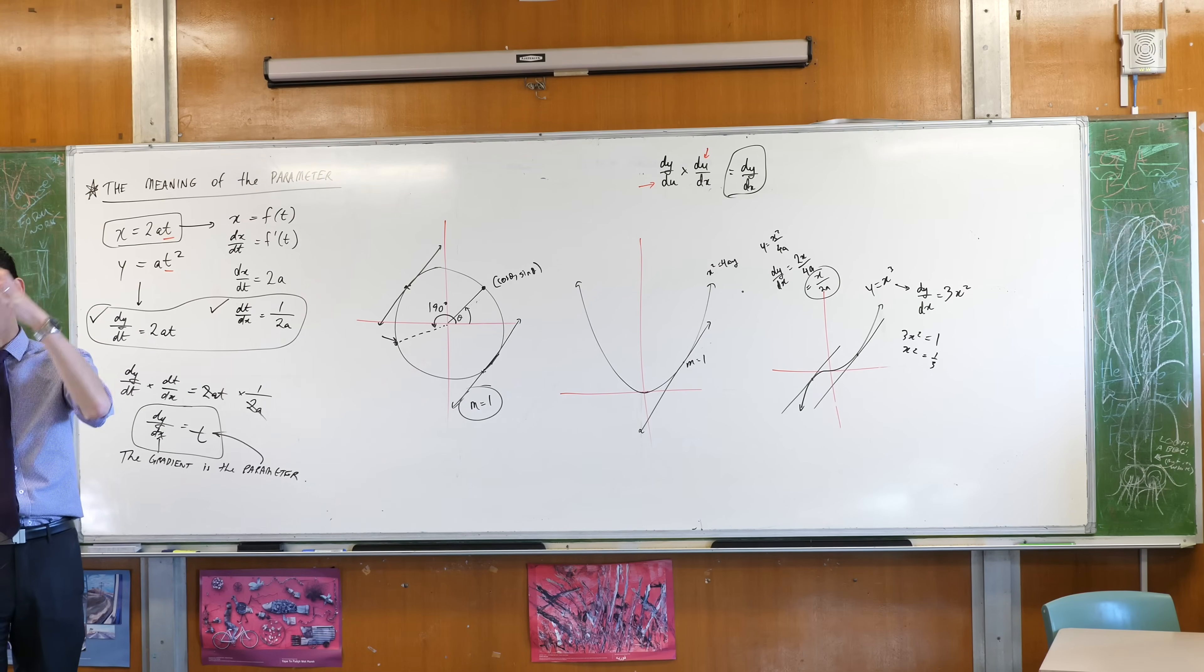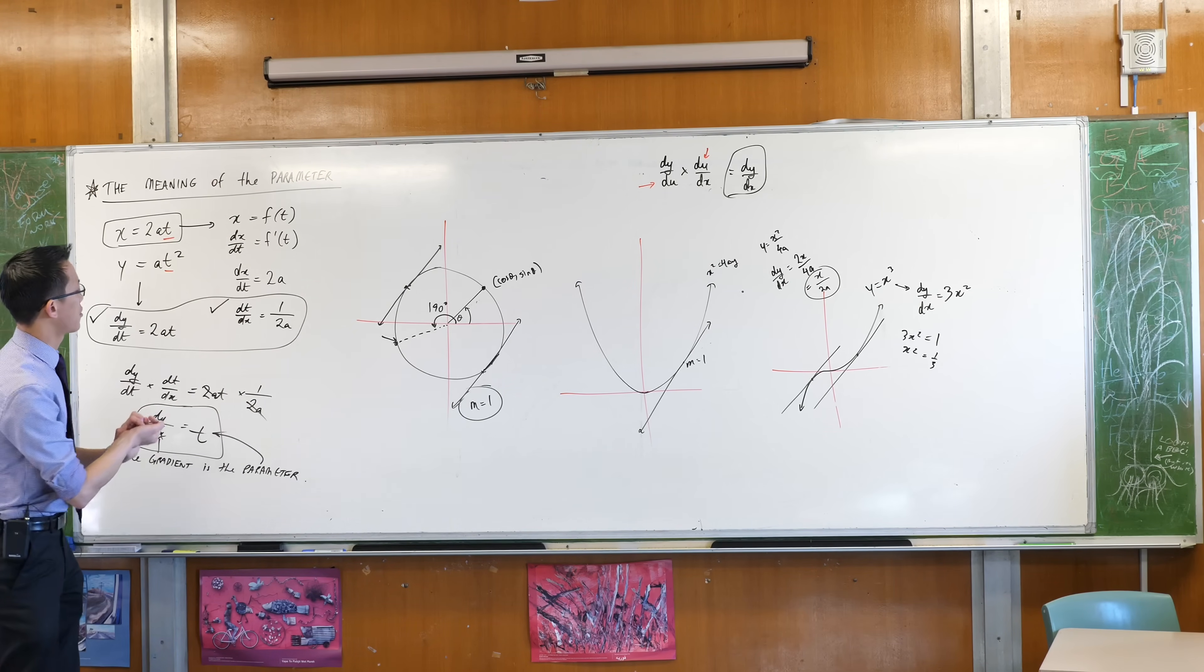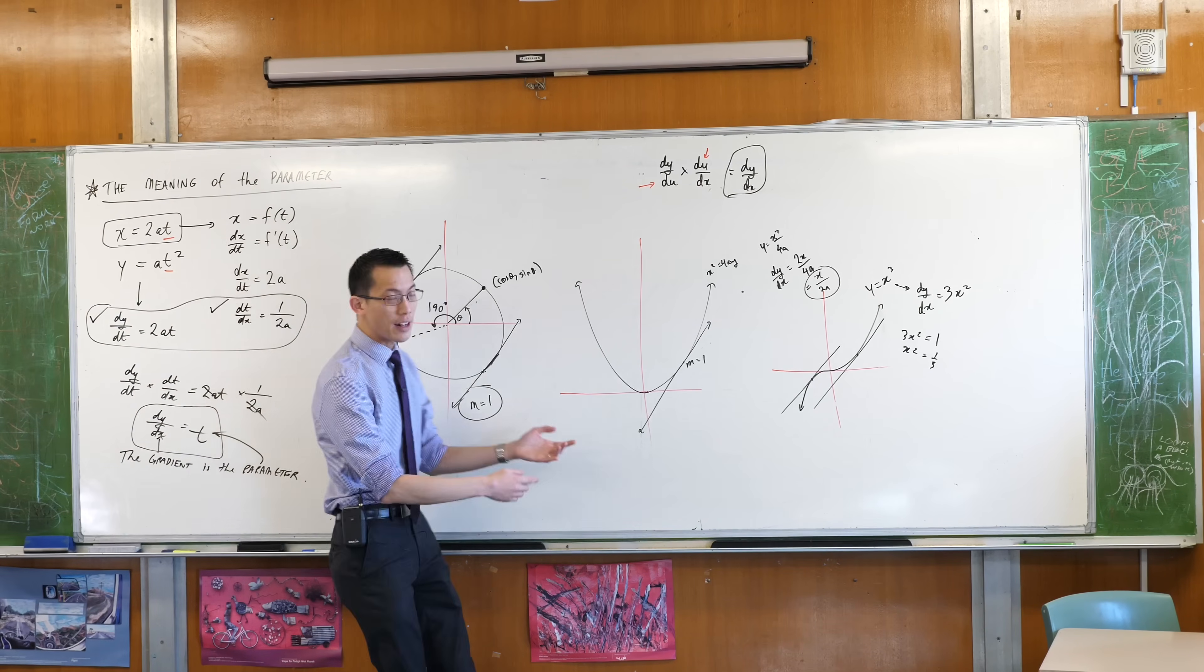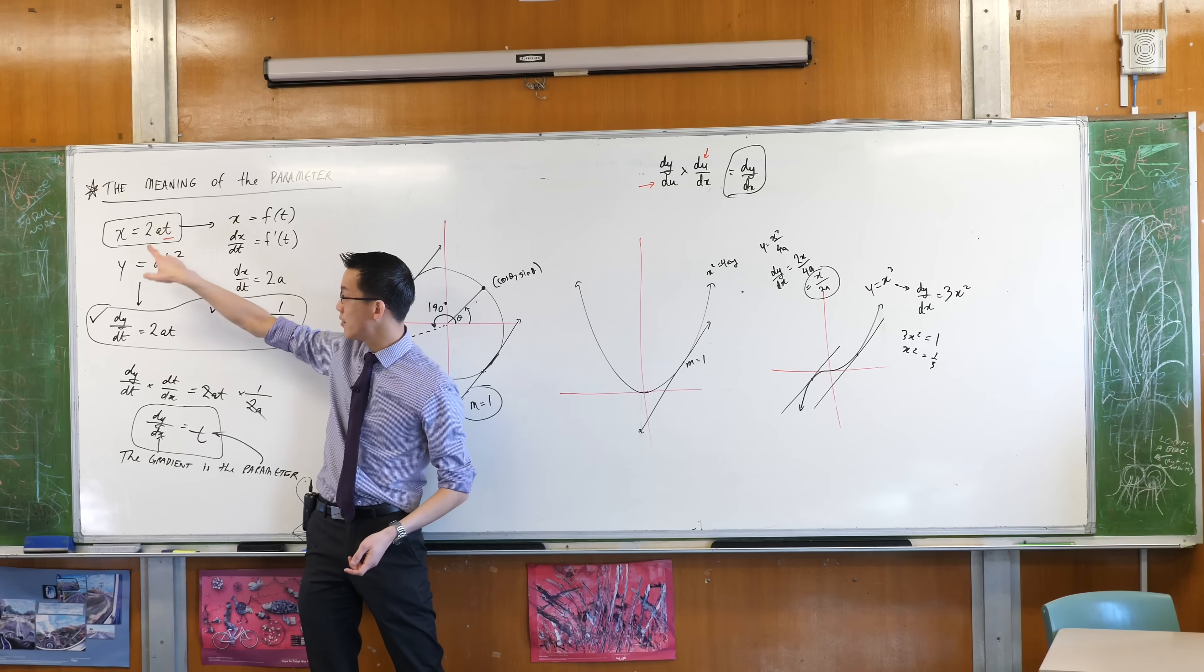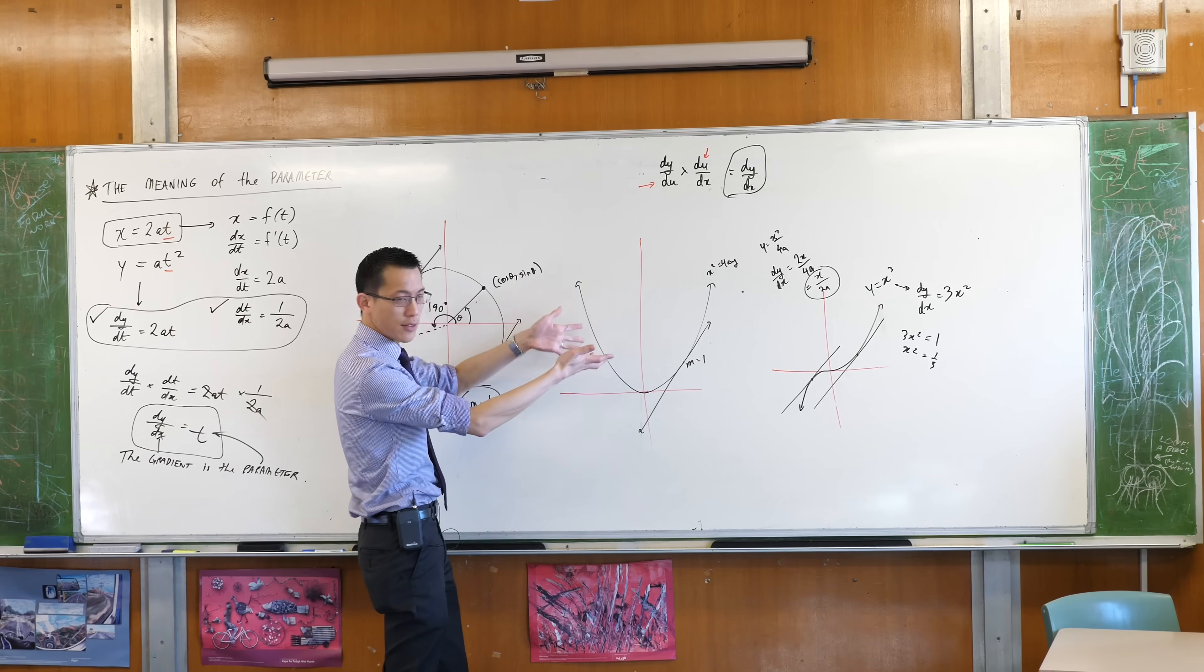When you're visualizing, there's a spot on this parabola, and its parameter is negative 2. Well, where is that? And the answer is, you don't have to put these values in first to get intuition for where it is, you just say, where on here is the gradient negative 2?